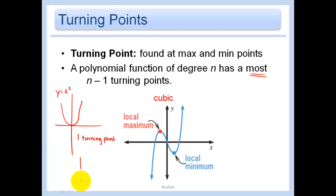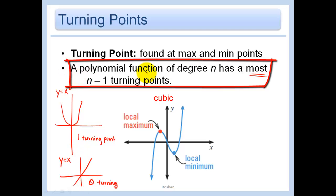Now think of a line. Simplest case would be y equals x. This has zero turning points. Well, that's because one, which is the degree here, minus one is just zero. And so the important part here is that the polynomial function of degree n has at most n minus 1 turning points.